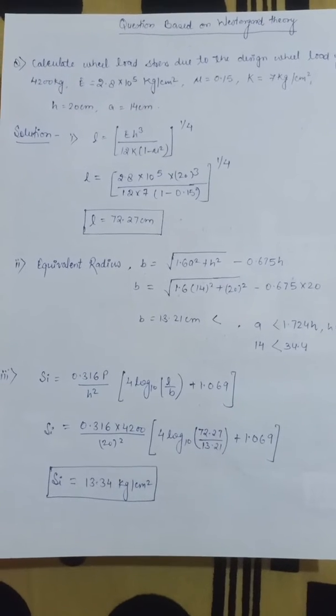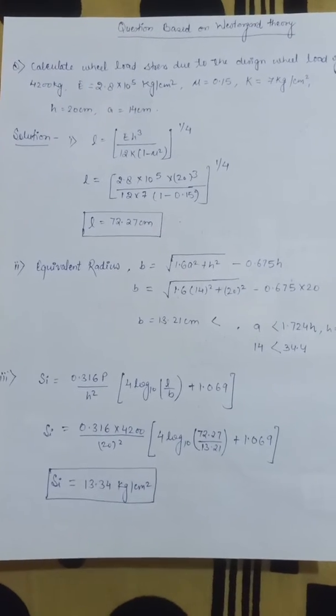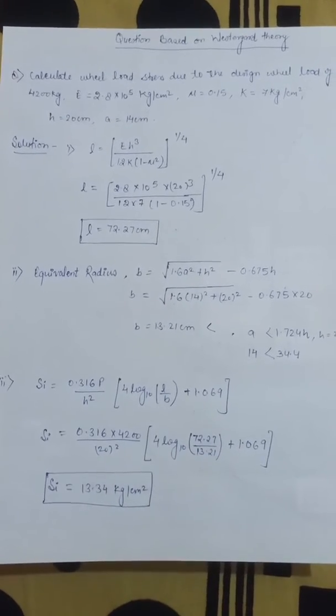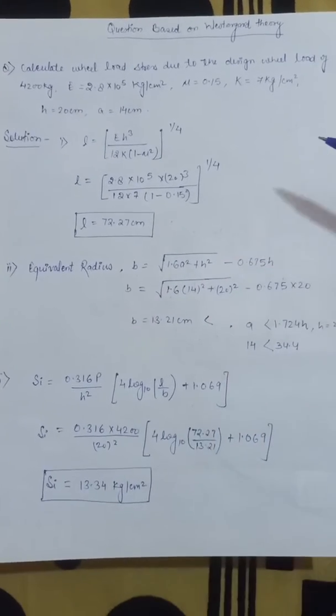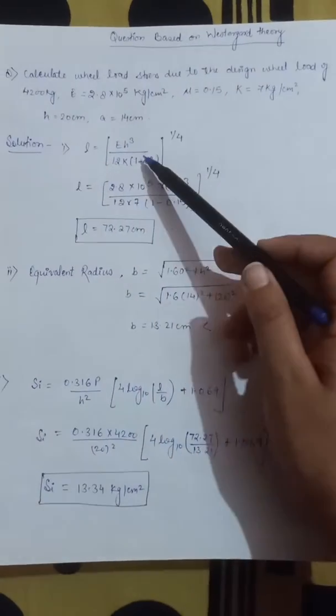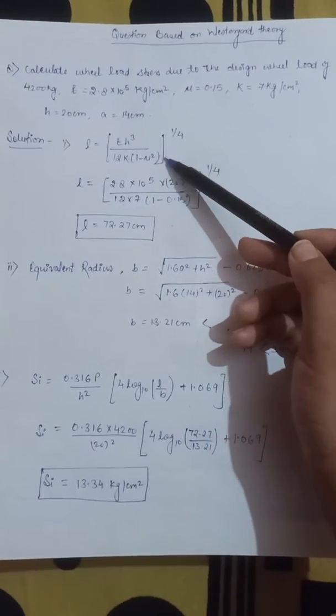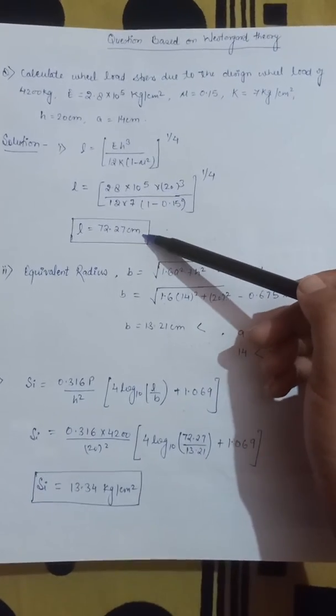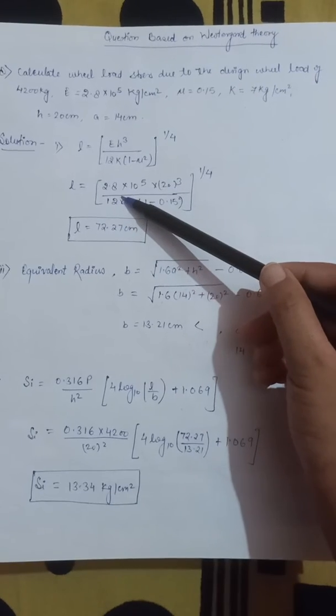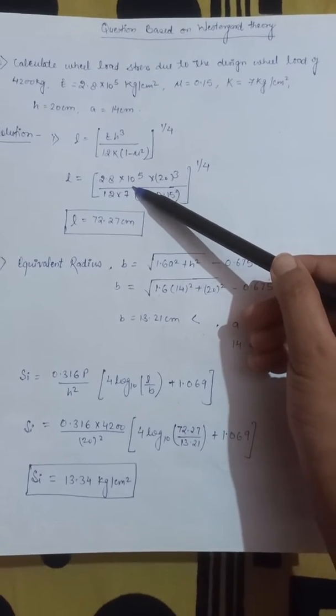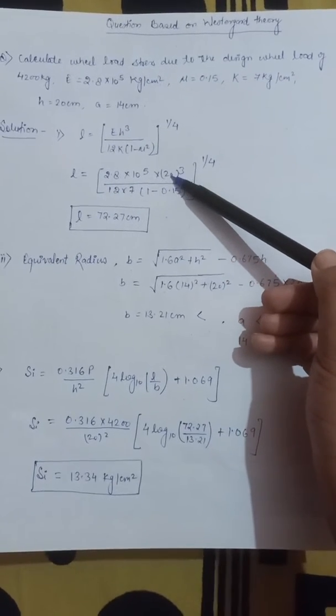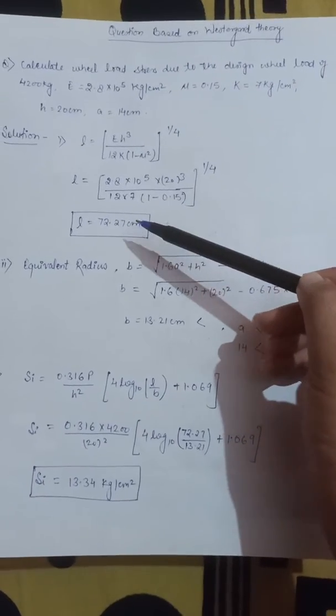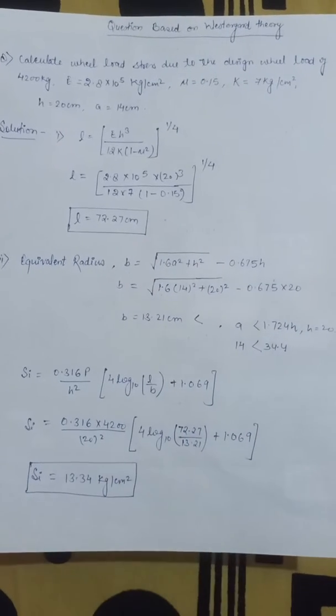Let's calculate the value of L and b. The value of L is relative stiffness and b is equivalent radius. The value of L is not given in the question, so we have to use the L formula which is Eh³/12K(1-μ²). In the question, E = 2.8 × 10^5, h is slab thickness 20 cm. We will put all the values and find the value of L which is 72.27 cm.